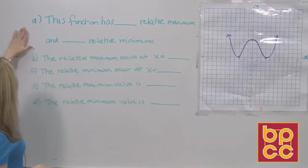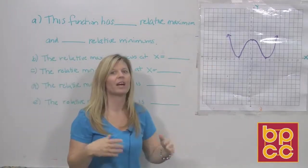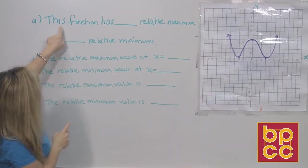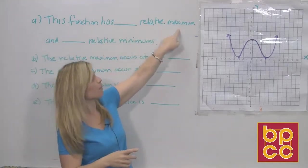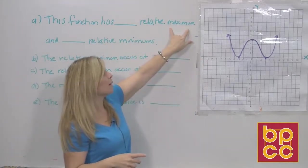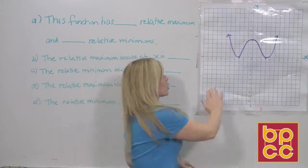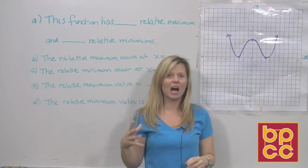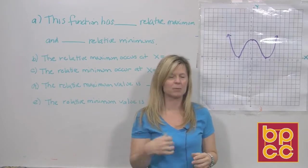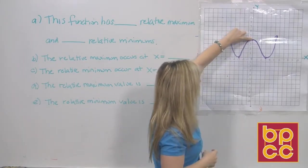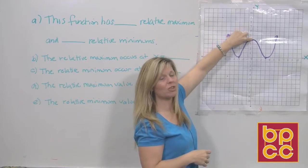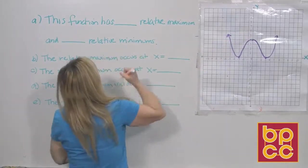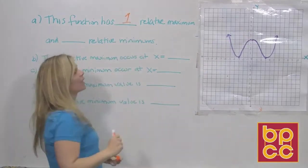I have five questions here related to this graph. The first question asks, this function has blank relative maximums. The word maximum means the highest. If you're looking at this graph, can you put your finger on the point that has the highest y-value, the maximum? Sure you can. It's right here. So we would say that point is our relative maximum and there's one of them. We have one relative maximum, the highest point we could put our finger on.